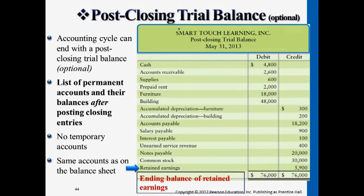So for the post-closing trial balance, the retained earnings here is already up-to-date — the new retained earnings, the ending balance. That's the only difference between this post-closing trial balance compared to the worksheet's adjusted trial balance column. The only difference is really just the retained earnings. All the other accounts are there, and also revenues and expenses are different because we transfer that amount to retained earnings.